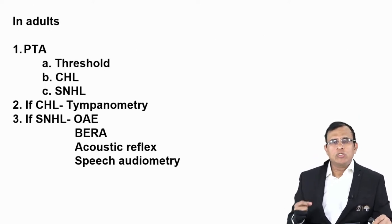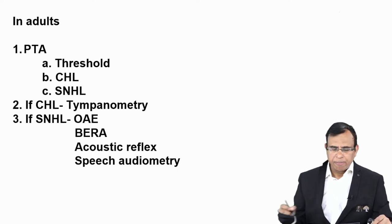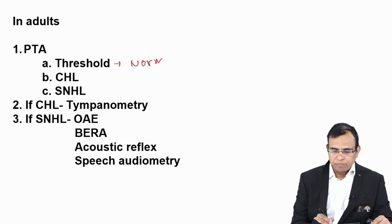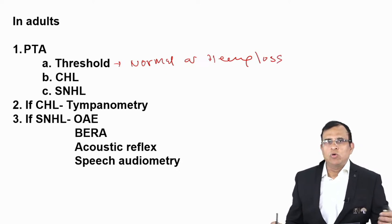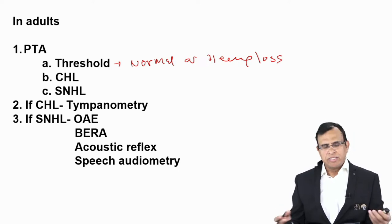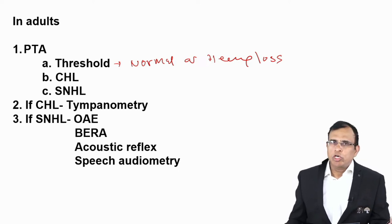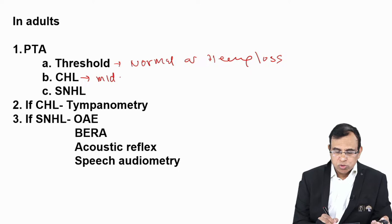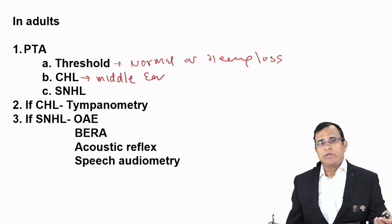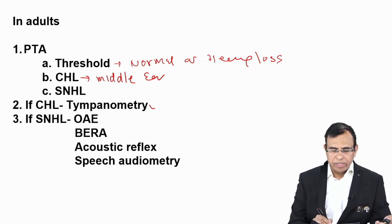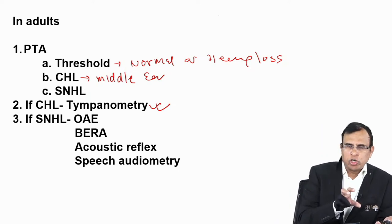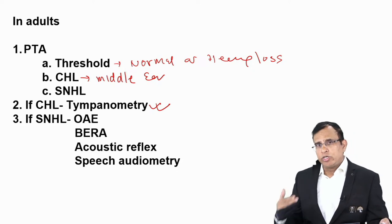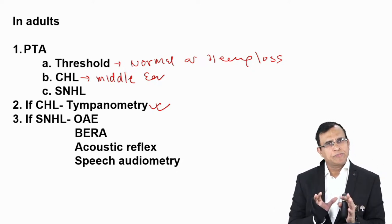Pure tone audiometry gives you the threshold of hearing — from that you know whether there is hearing loss and its severity. It can also tell you whether it is CHL or SNHL. If CHL, you may do tympanometry for more information. If SNHL, you add BERA, OAE, speech audiometry, and acoustic reflex. In children we now prefer OAE as the investigation of choice, and BERA as the second; free-field audiometry is outdated.